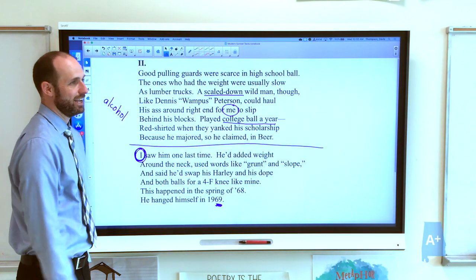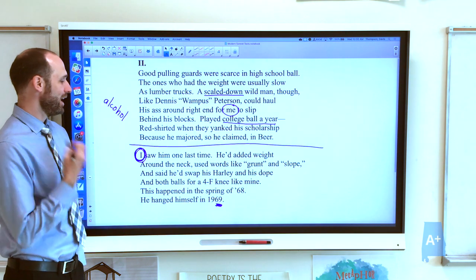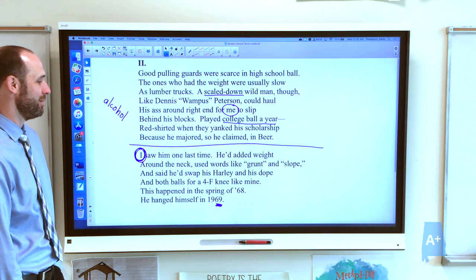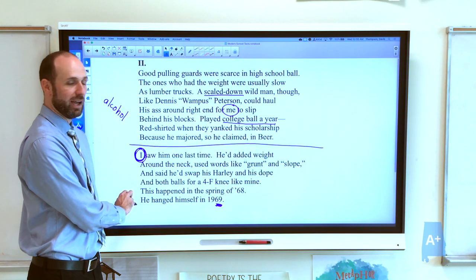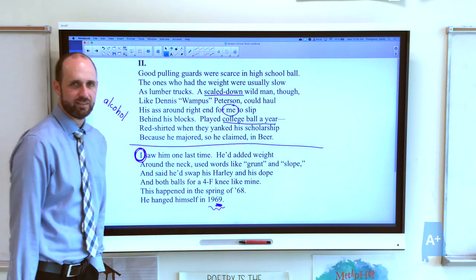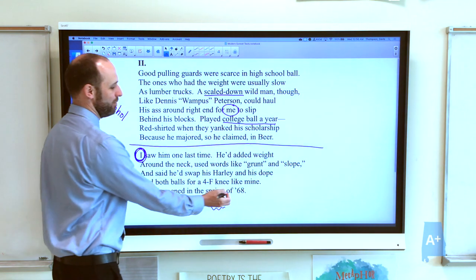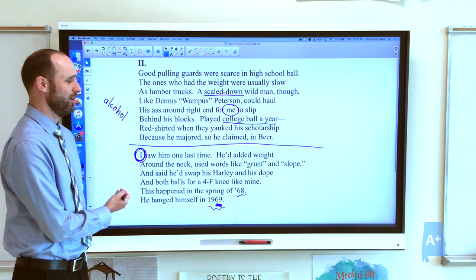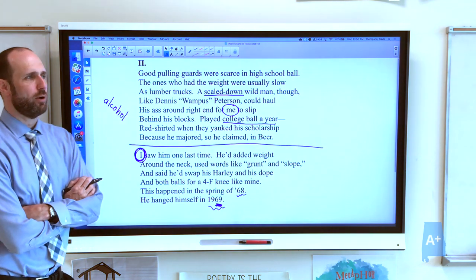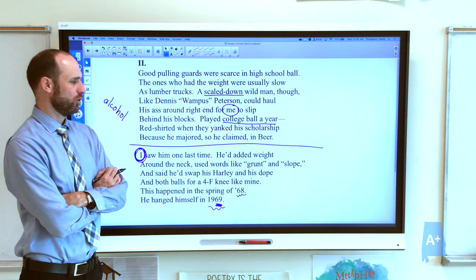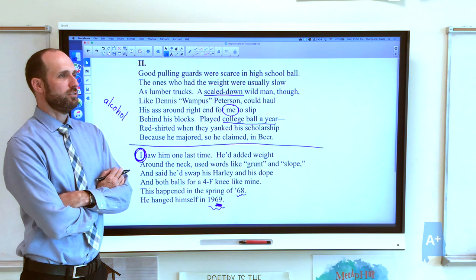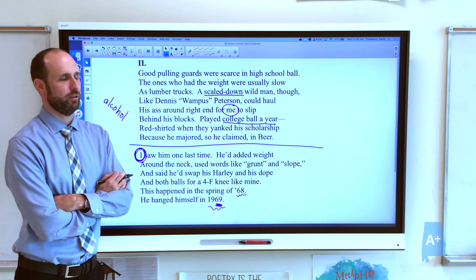Our narrator shows up very strongly with the I. I saw him one last time. He'd added weight around the neck, used words like grunt and slope, and said he'd swap his Harley and his dope and both balls for a 4-F knee like mine. This happened in the spring of 68. He hanged himself in 1969. You know we're in the presence of an amazing poet when he can just slip the date, 1969, the numbers, into the rhyme scheme and the meter of his poem, almost flawlessly. But it's sad, right? When our narrator sees him, he's clearly in a bar. And the guy has put on weight, whereas he used to be scaled down. And he's using what I would call rough infantry lingo. He's using words like grunt, which would be the lowest soldier in the chain, the infantry soldier. And he's using racist terms like slope, which was similar to like Charlie or gook. It was sort of a racial slur that was used to describe the Viet Cong.